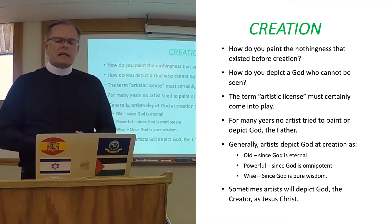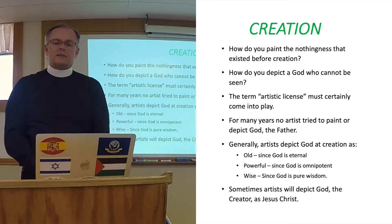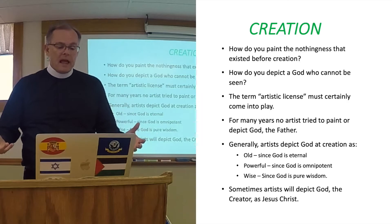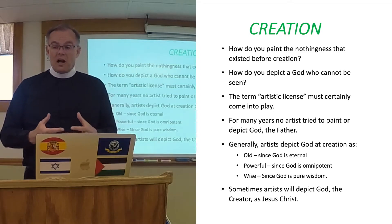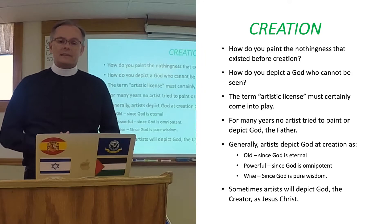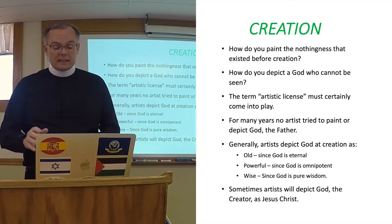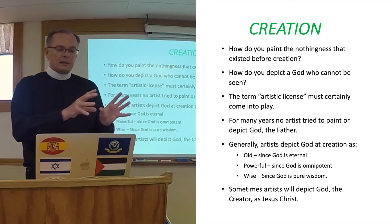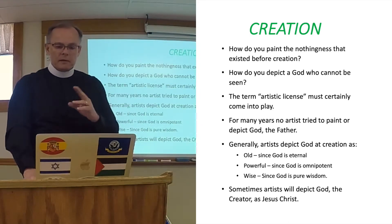Around the year 800 to 900, Christian artists started using the hand of God as a symbol for God, and then it gradually developed that artists depicted God usually as a human being. Generally, to show the attributes of God, artists paint God as an old man — because God is eternal and eternity is a long time — as a powerful man, since God is omnipotent, and as a wise man, because God is all-knowing. Sometimes artists will also depict God the Father as Jesus Christ, and that's quite good theology to picture God as Jesus Christ, because Jesus Christ is God in flesh. We'll talk a little bit more about that in later lessons.